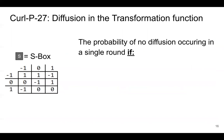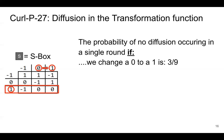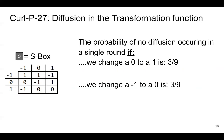Let's look at the S-box and the probability of no diffusion occurring in a single round. When a zero is changed to a one, the probability is one third, or three out of nine — we can see this trivially from the S-box. Minus one to zero is also one third, and minus one to one is zero, because it's perfectly balanced — whatever you change will result in a change.